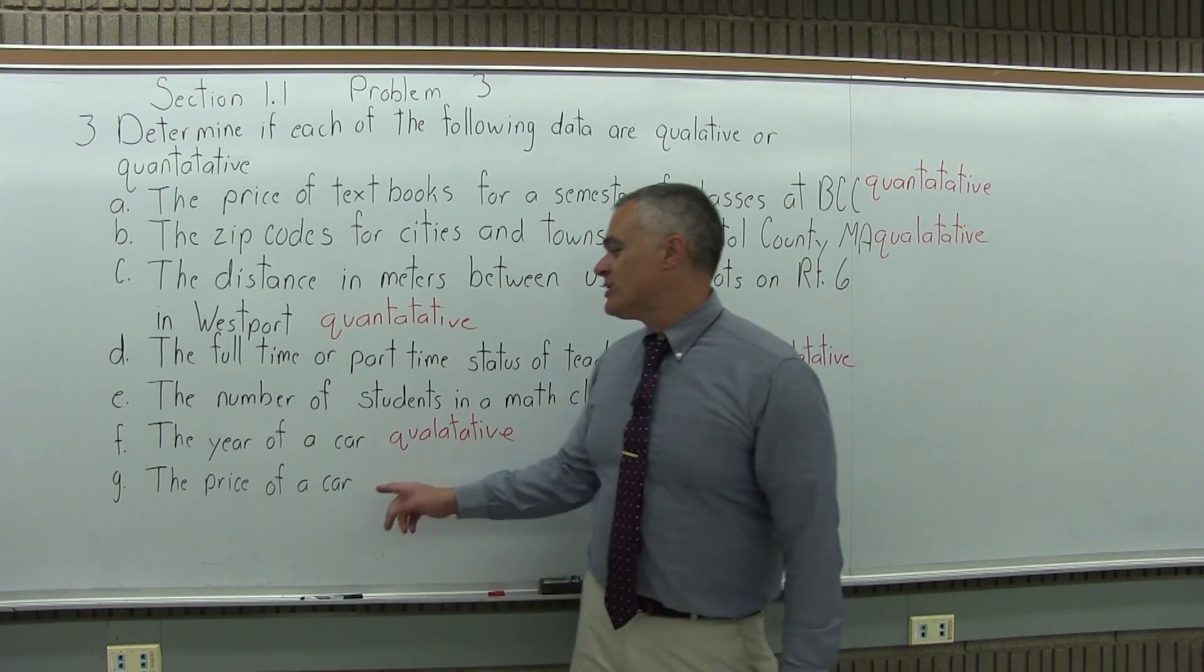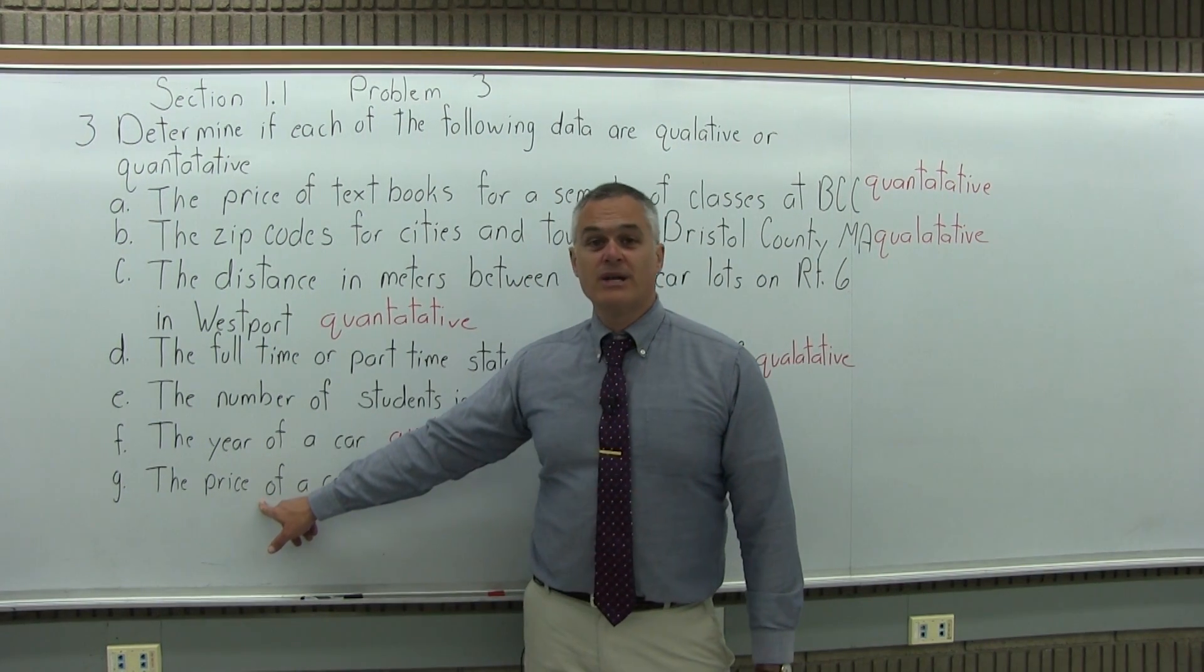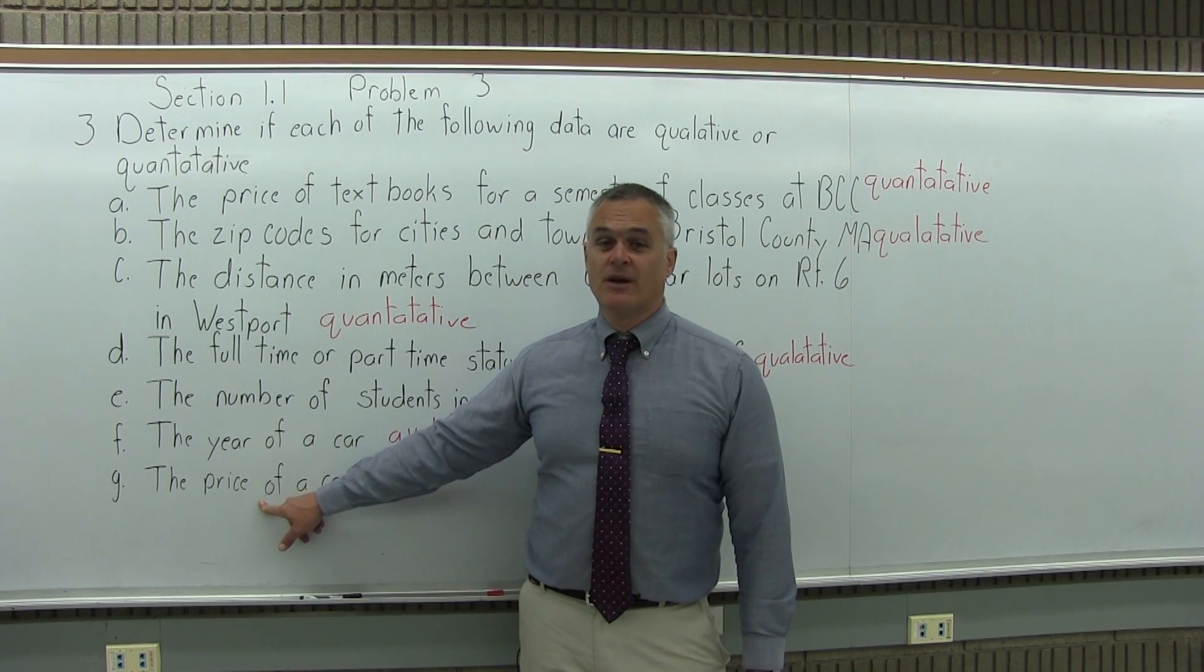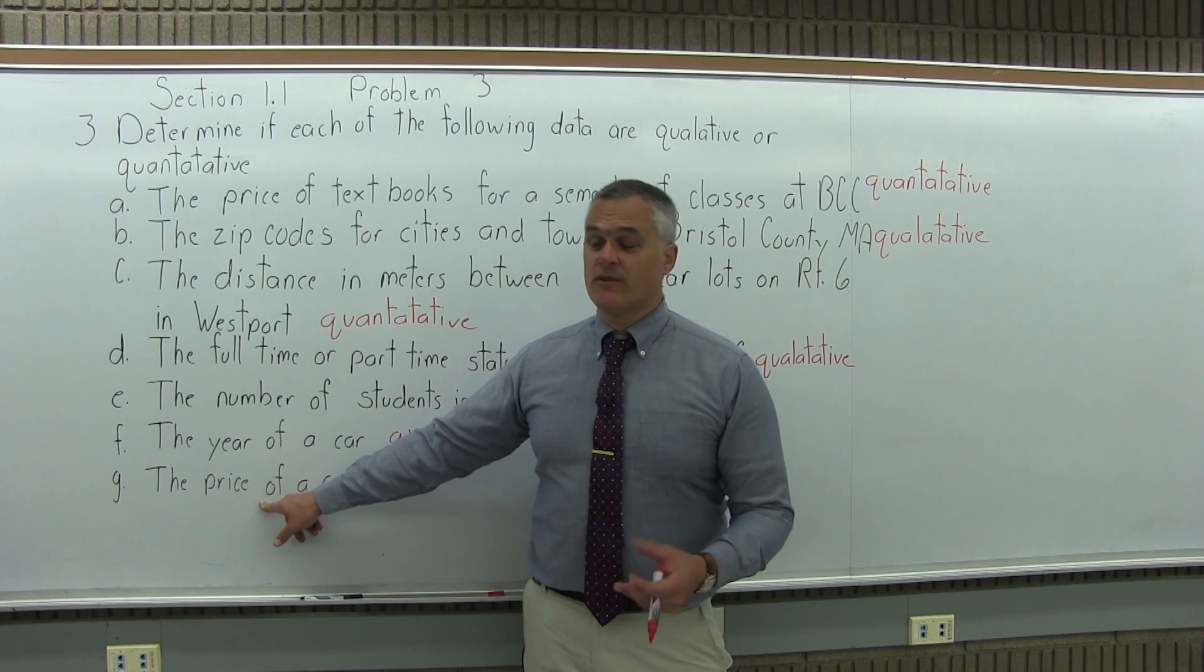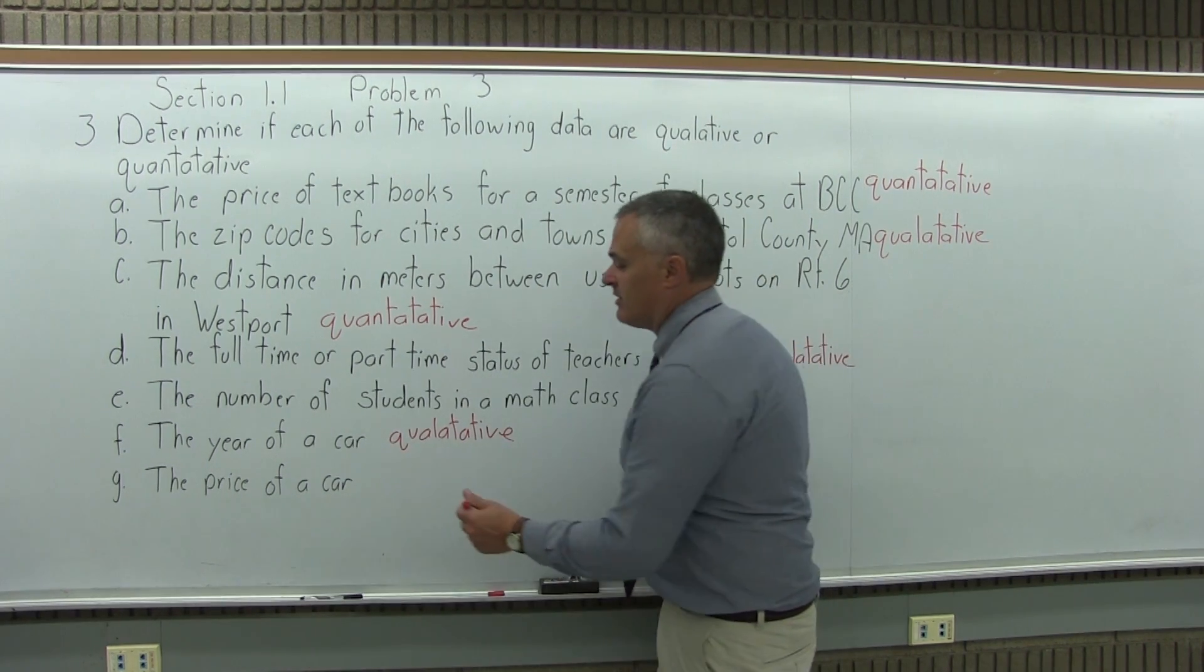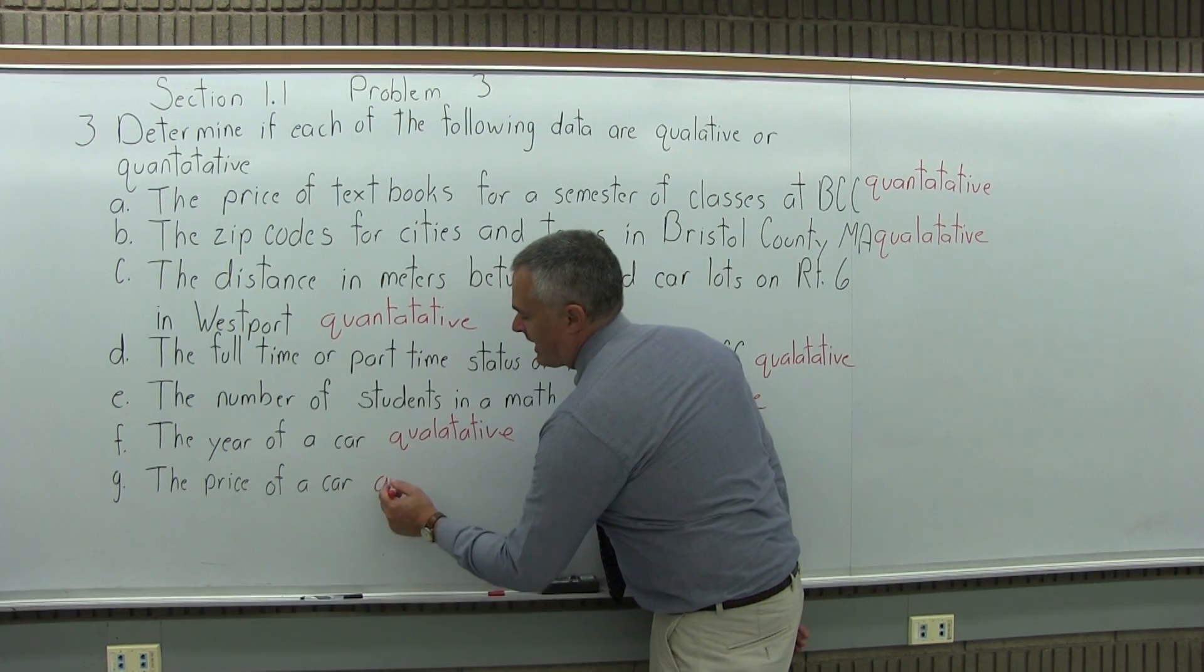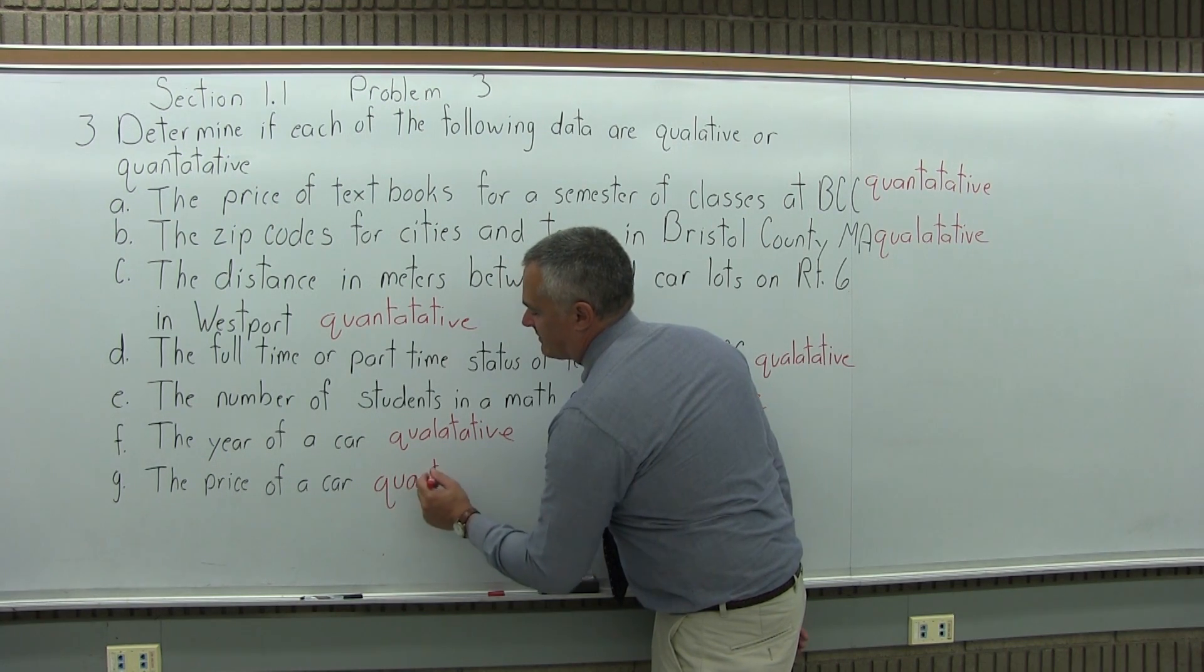And then G changes it a little bit. It's still about cars, but now it's the price of a car. So you are still dealing with a number answer, but that number does measure a quantity of something, the quantity of money you have to pay in order to own the car. So the last one, part G, is quantitative.